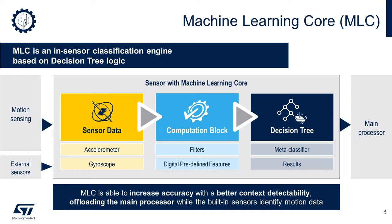After applying those filters and features to the data, the device then relies on a set of decision trees that will run a machine learning model based on the captured data and provide as output the different results classified by the implemented model. In addition, the user can also rely on the meta-classifier feature to allow even higher reliability when providing the decision tree results to the main host microcontroller.